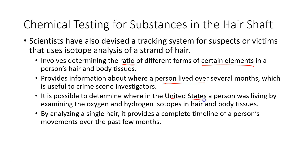It is possible to determine where in the United States a person was living by examining the oxygen and hydrogen isotopes in hair and body tissues, because different locations around the United States have slightly different oxygen and hydrogen concentrations. By analyzing a single hair, it provides a complete timeline of a person's movements over the past few months. For example, if they moved from Atlanta to Topeka, Kansas, over the course of a few months of hair growth, you can look at different sections of the hair and use isotope data to determine when they left Atlanta and when they arrived in Topeka. It's not open to debate — it's literally science proving where they were.